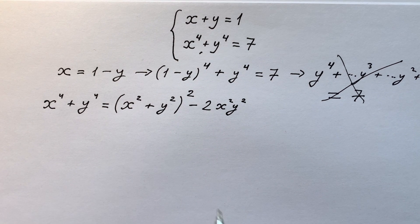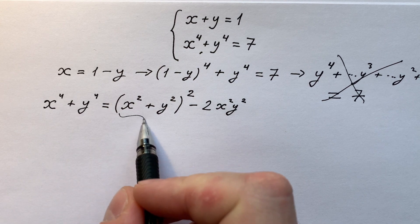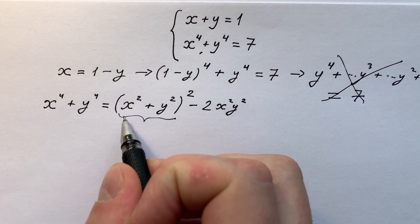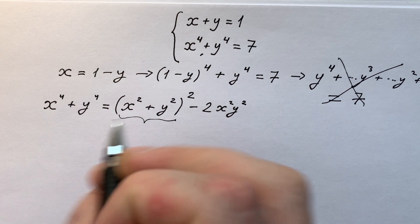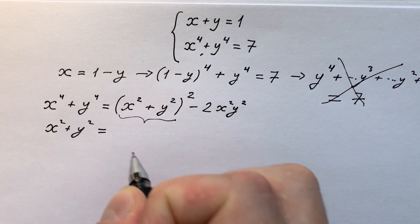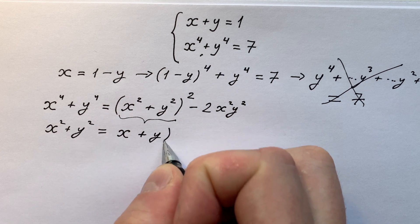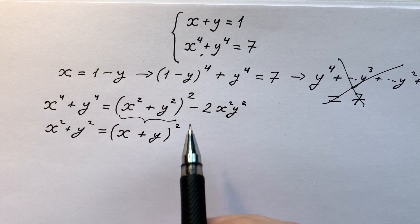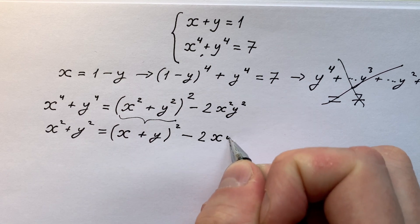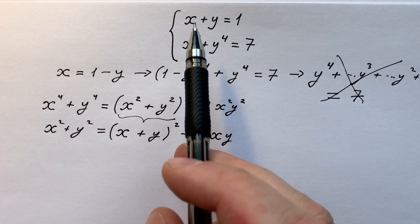Now let's repeat this transformation to the bracket (x² + y²). It is also a perfect square: x² + y² equals (x + y)² minus 2xy. So we get (x² + y²) = (x + y)² minus 2xy, which is very similar to what we had before.